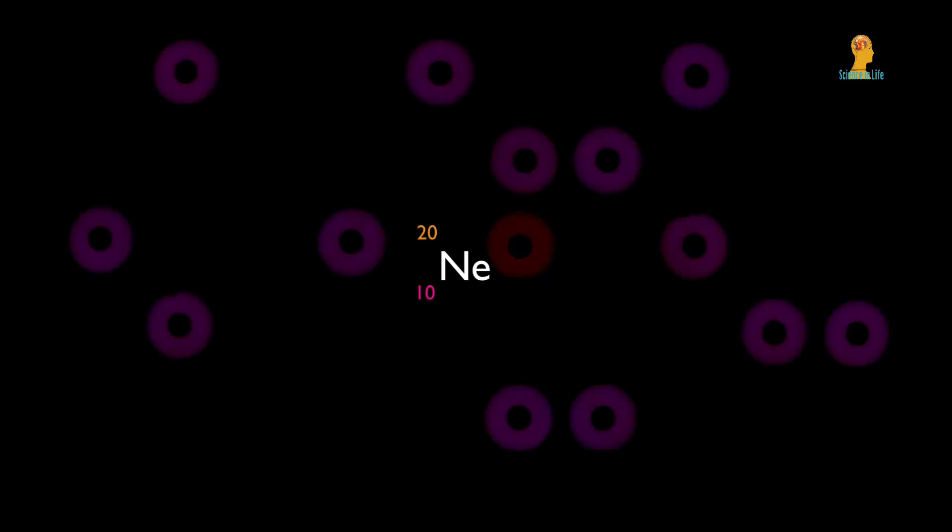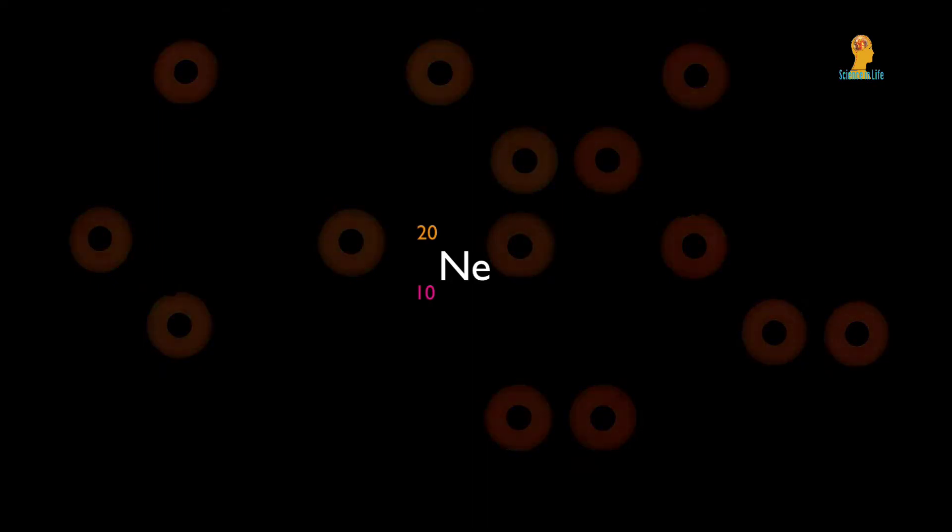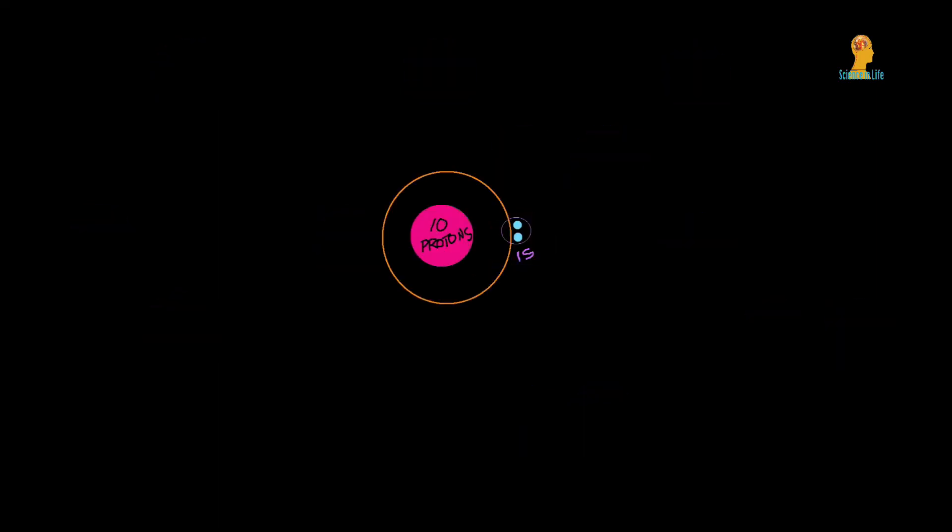Consider an inert element like neon. A neon atom has ten electrons that are distributed in two shells or energy levels. Two electrons are in the first shell in the S sublevel. We call it one S. That is, these two electrons are in the first energy level in the S sublevel.